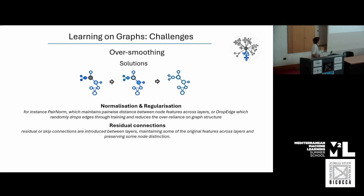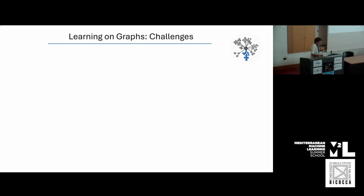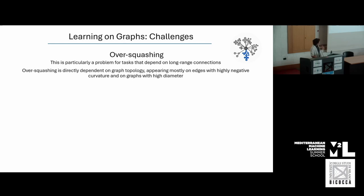Additional solutions to over-smoothing include adding residual connections between layers, which allows access to representations from the previous layer and helps preserve node distinction. You can also introduce oscillators or other dynamical aggregation methods — connecting back to my physics undergrad — which has been proven to help. Gated mechanisms can also control the flow of information. There is no one right solution; it depends on the problem, your graph, and your question, and there is quite a lot of research in this area.